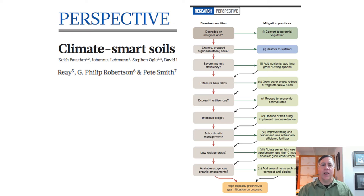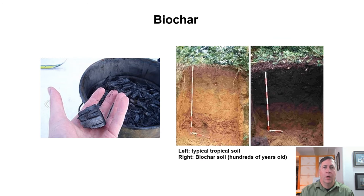Restoring degraded land can sequester CO2 in plants and soils. Depending on the current condition of the land, there are practices to optimize its carbon storage potential. Biochar is a type of charcoal used as a soil amendment — it can sequester carbon in soil for thousands of years and also reduces pressure on forests by retaining soil fertility on farmland.